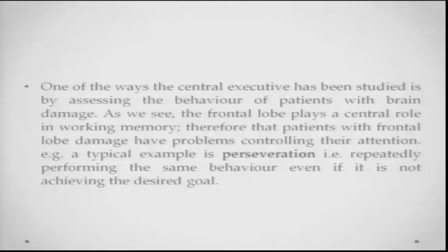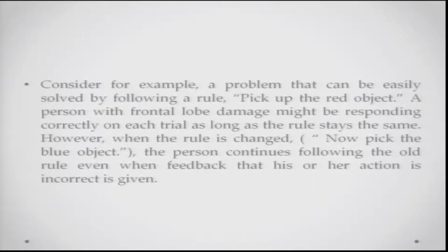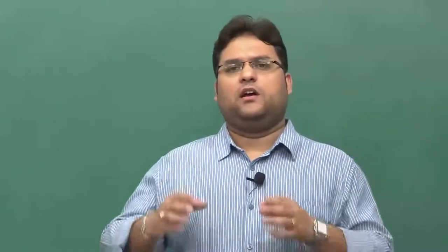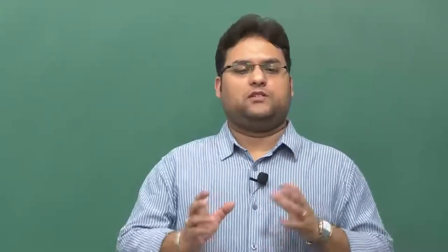One way the central executive has been studied is by assessing patients with brain damage. The frontal lobe is supposed to play a central role in working memory, and patients with frontal lobe damage have been found to have more problems with attention control. A typical example is perseveration — repeatedly doing the same behavior even when it does not achieve the desired goal. If a rule changes, a person with frontal lobe damage will continue picking the same object again and again, having difficulty shifting attention from the old rule to the new one.